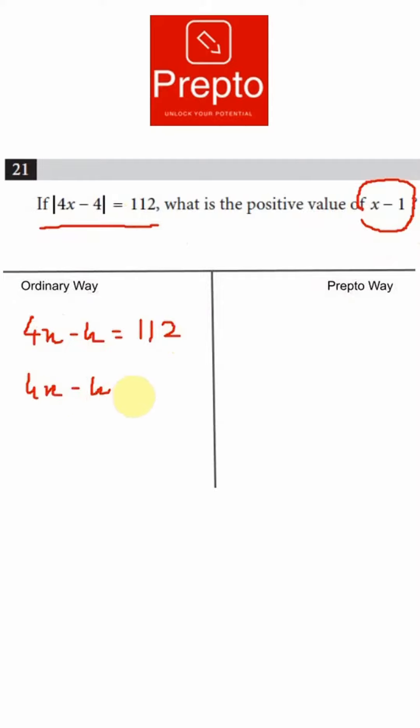Then we will expand this and find out possible values of x. In this case you'll get 4x is equal to 116, x is 29, and in the other case you'll get 4x is equal to minus 108, and x is minus 27.